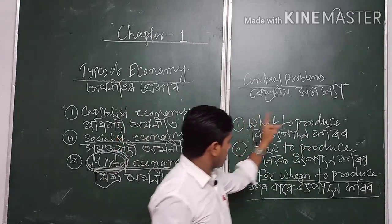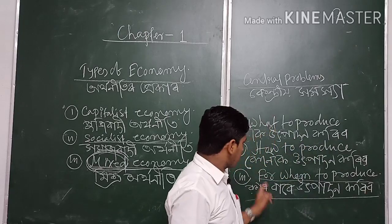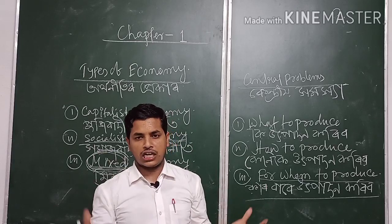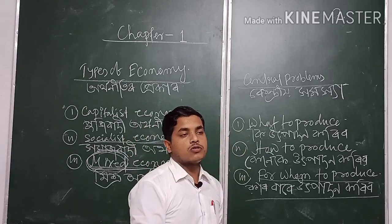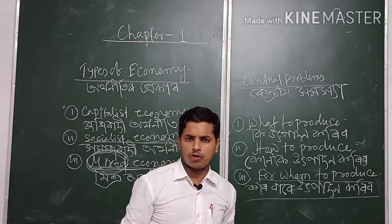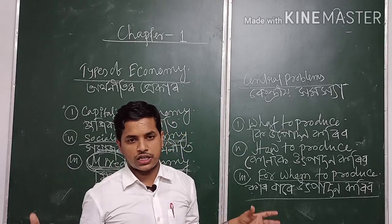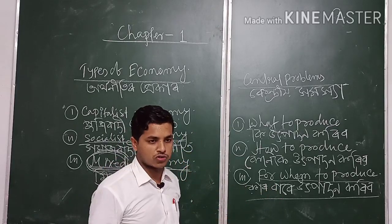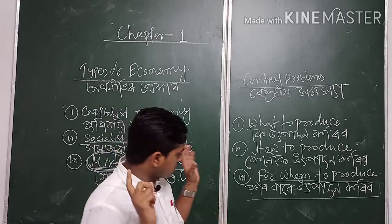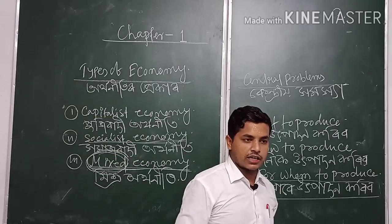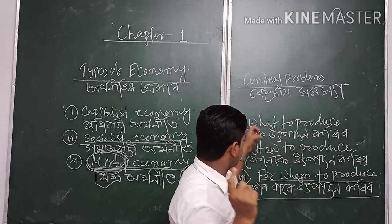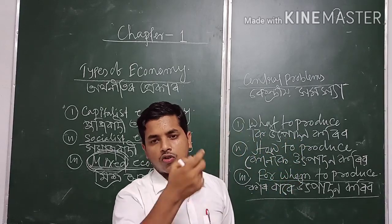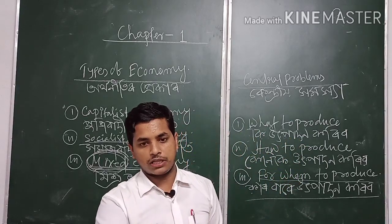Once we have selected the commodity and decided how to produce, the next central problem is for whom to produce. Suppose we produce a commodity using a labor intensive technique — for whom are we going to produce it? In society there are different sections such as the upper class, middle class, and backward class. We have to decide for which section we are going to make production, and that decision also has to be made.